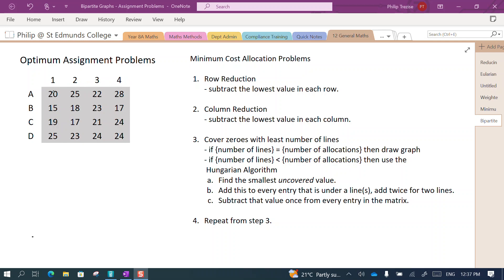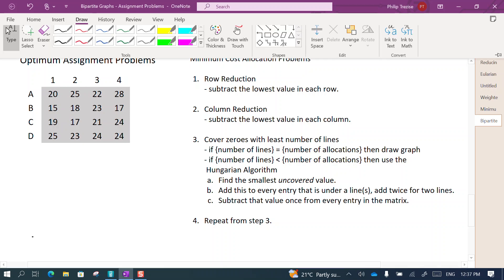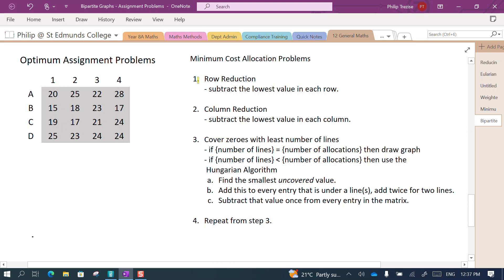We can only give each person one job to do and we want to assign these so we get the smallest total cost, the minimum cost, or the best assignment. Now let's go through our first step. Our first step here is row reduction.